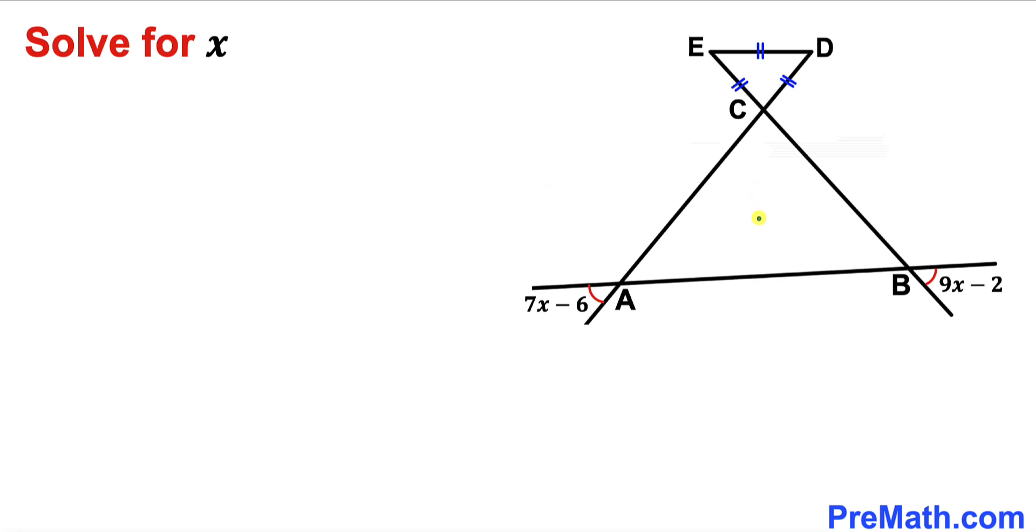Welcome to PreMath. In this video we have these two triangles, as you can see in this diagram. This triangle E, C, D is an equilateral triangle. Moreover, this angle A is 7x minus 6 and this angle B is 9x minus 2. Now we are going to find the value of x.